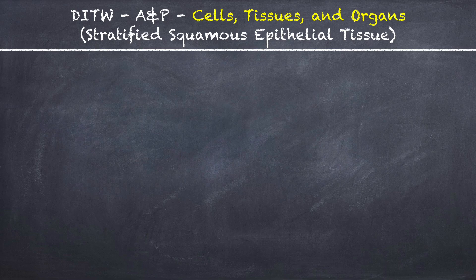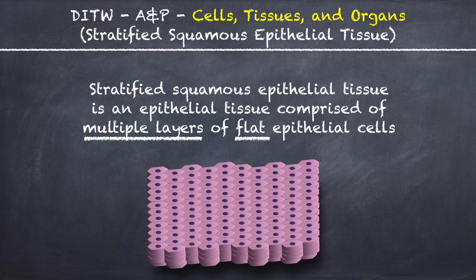This is DITW Anatomy & Physiology and you are watching the video on Stratified Squamous Epithelial Tissue. Stratified Squamous Epithelial Tissue is an epithelial tissue comprised of multiple layers of flat epithelial cells.